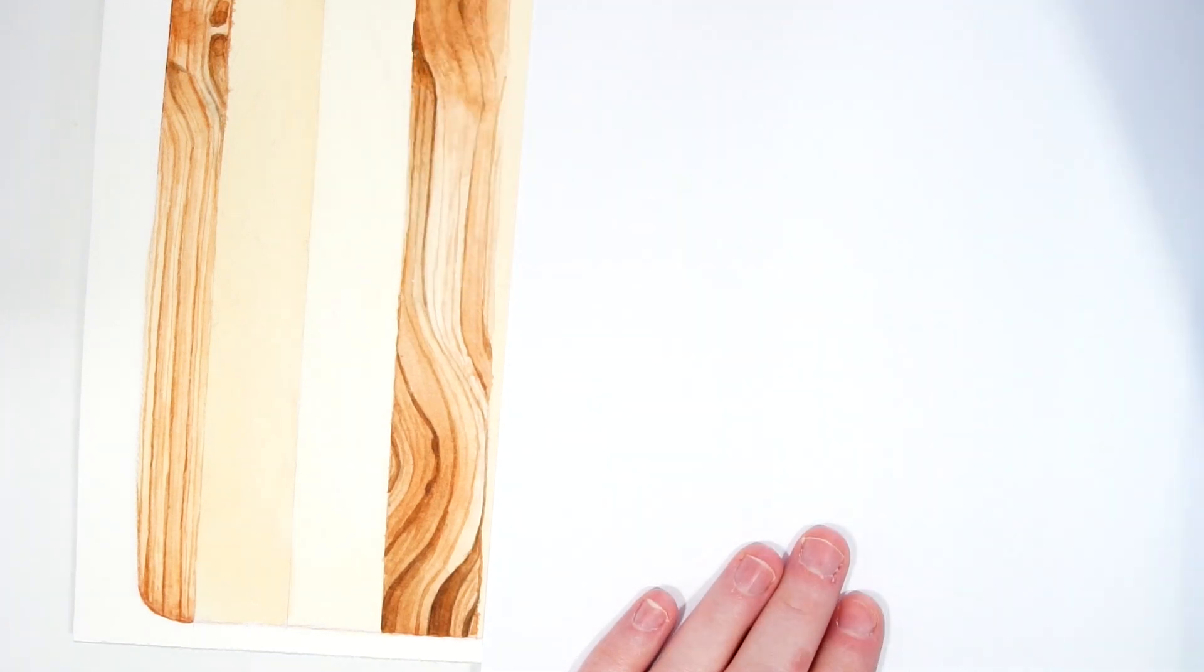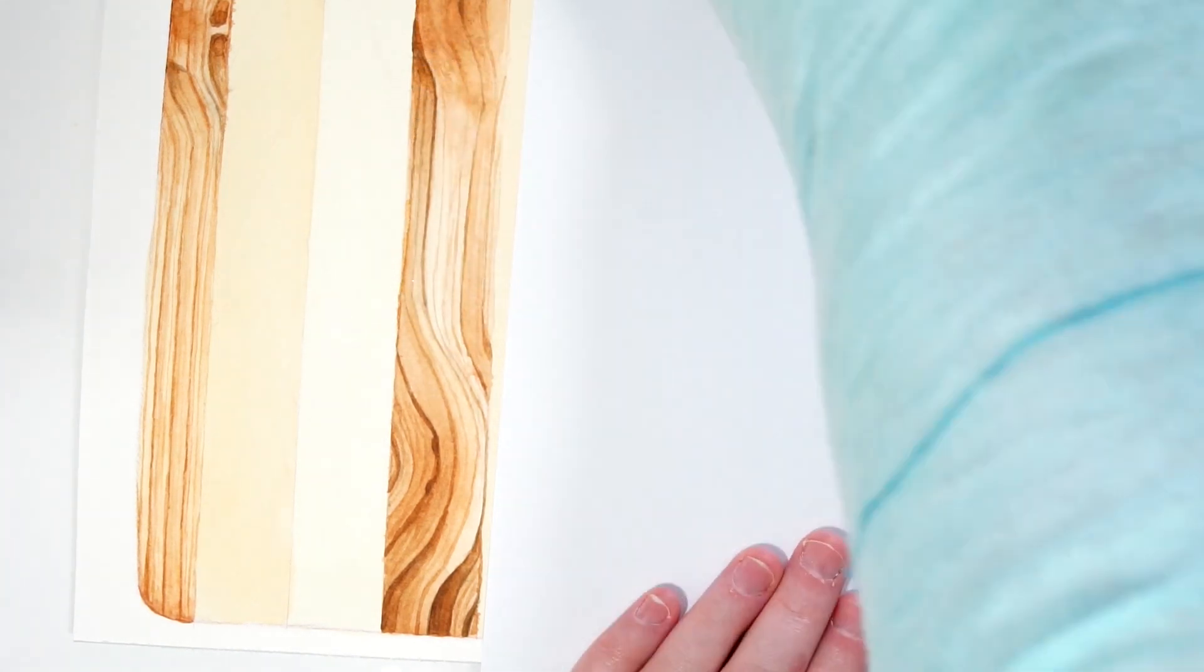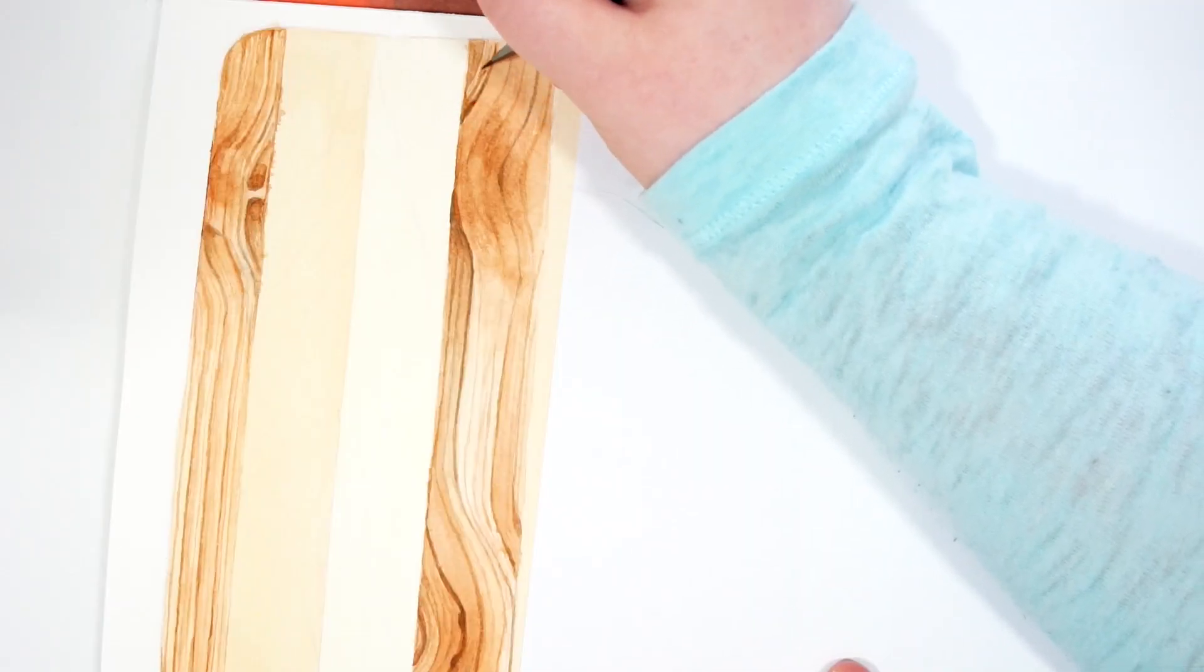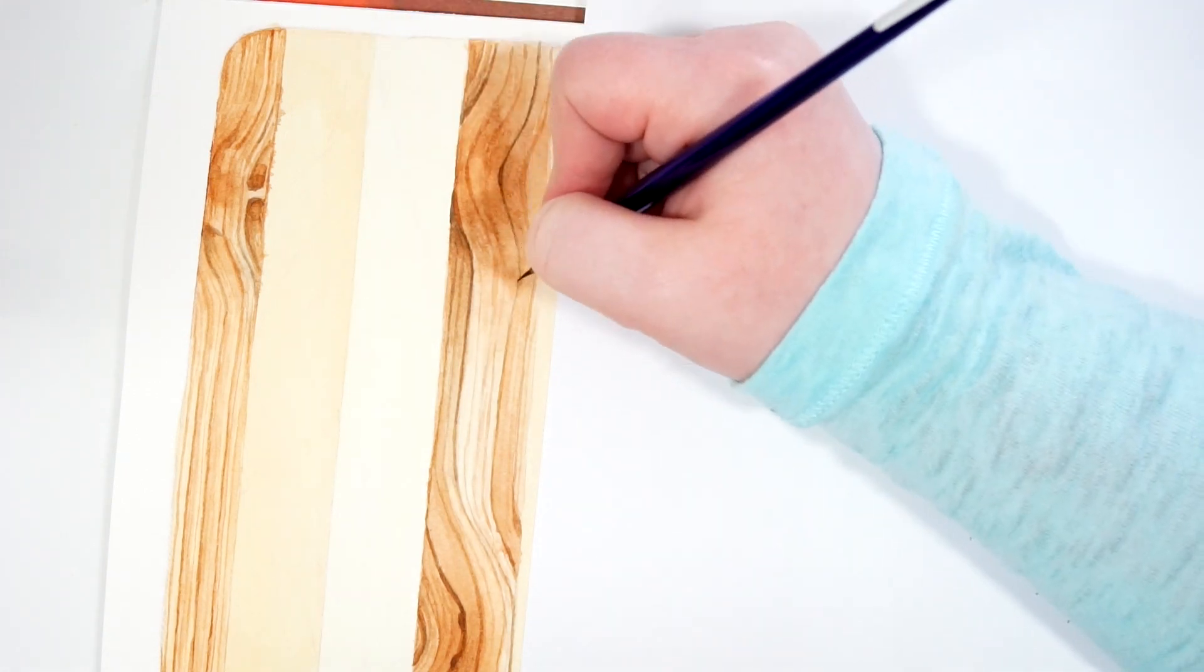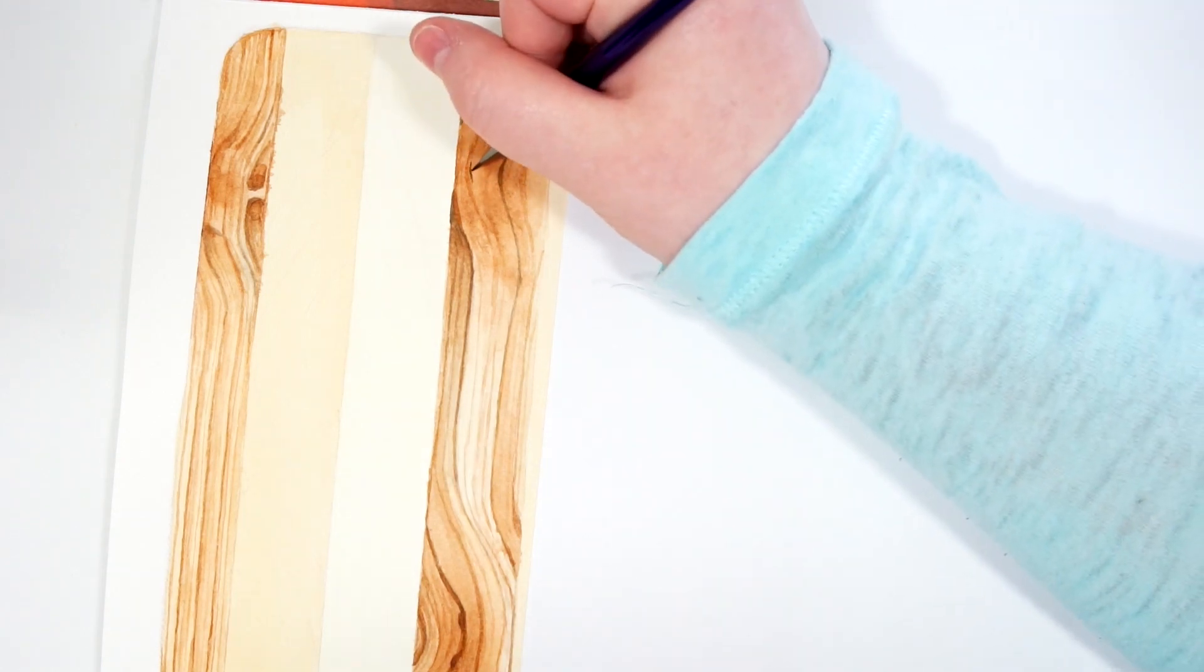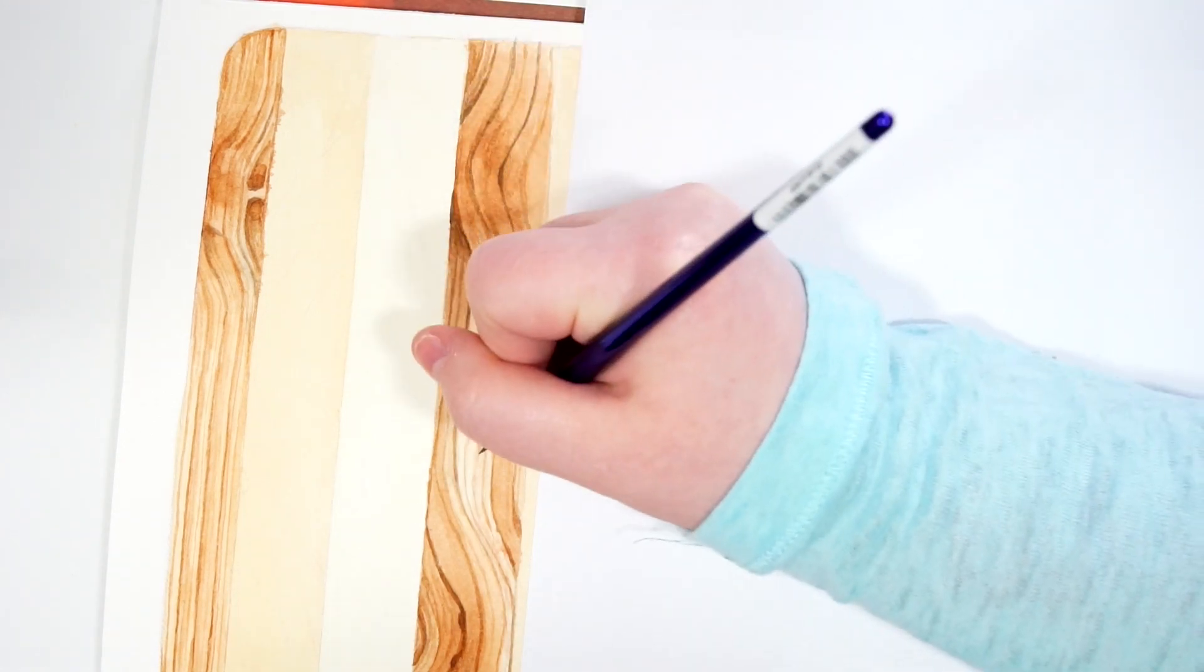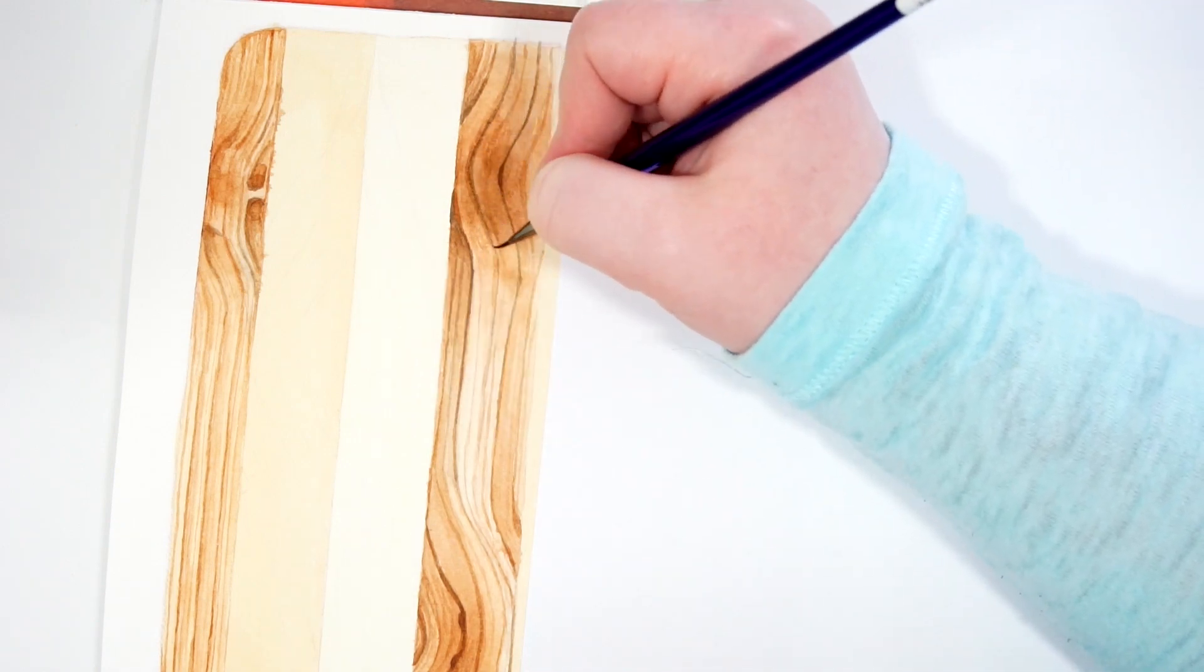And here you can see I'm just going through and once again just darkening my initial wood grain pattern and then going through and just adding variation. I'm making some of the lines wider and I'm also going through and I am adding some other grain lines to my pattern to make it more interesting. Some of the grain I'm using my burnt sienna colors and in some I'm going through and I'm adding some sepia.